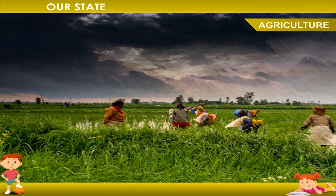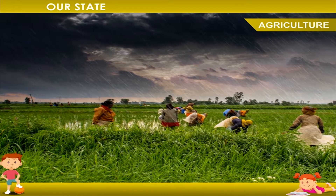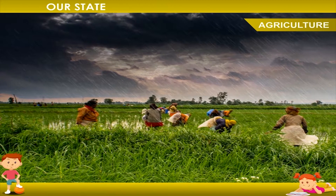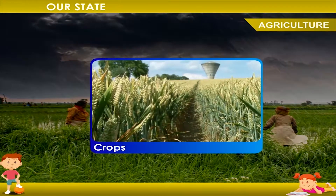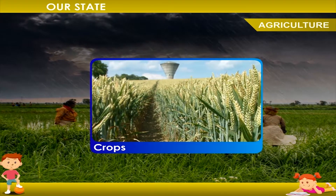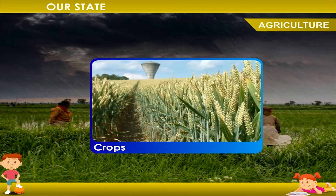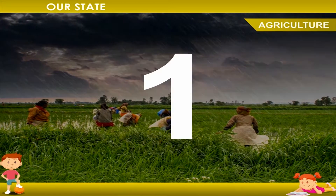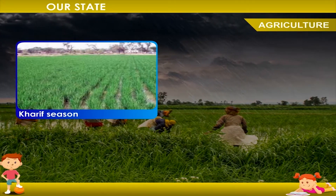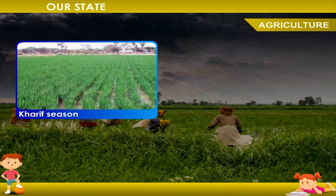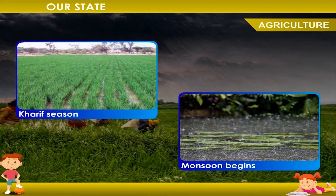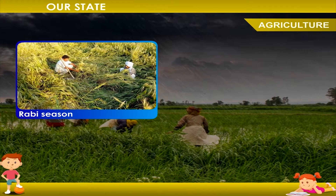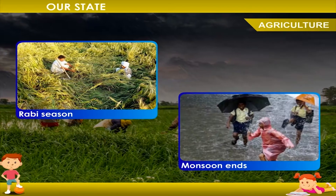Agriculture: India is a land of agriculture. Due to its various climates, there are a variety of crops grown in different parts of the country. We have two agricultural seasons — the Kharif season, which begins with the monsoon, and the Rabi season, which begins when the monsoon ends.